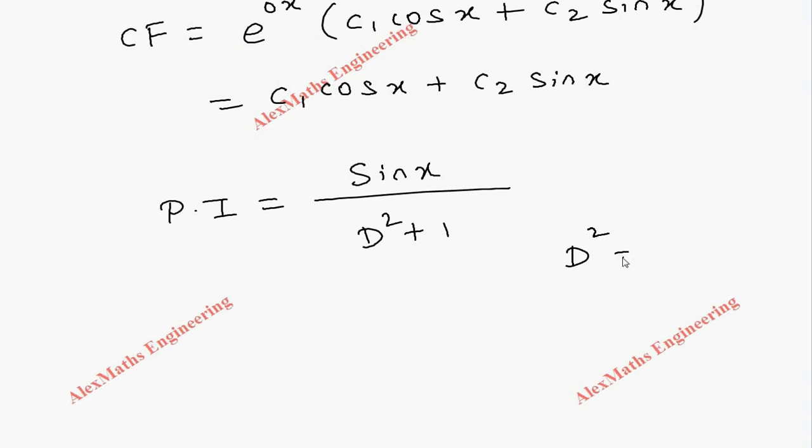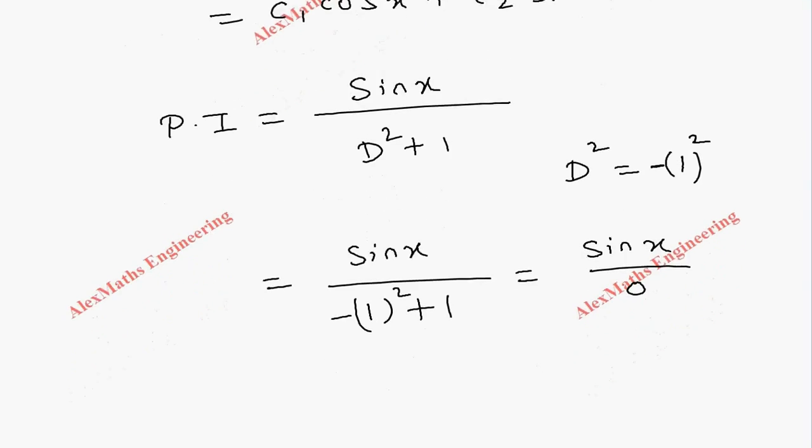So it becomes sin x / (-1² + 1) = sin x / (-1 + 1) = sin x / 0. When the denominator becomes 0, we multiply the numerator by x and differentiate the denominator.